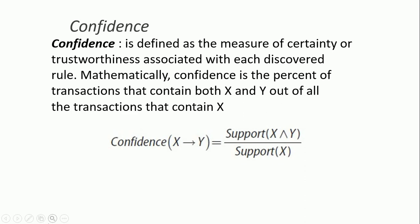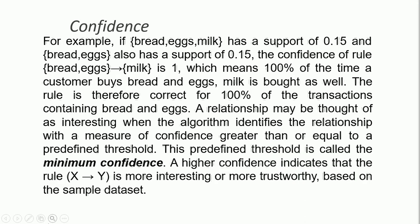Mathematically, confidence is the percentage of transactions containing both X and Y, out of all transactions that contain X. For example, bread and egg has a support of 0.15, and the confidence of the rule bread and egg implies milk is 100% — meaning 100% of the time a customer buys bread and egg, milk is purchased as well.